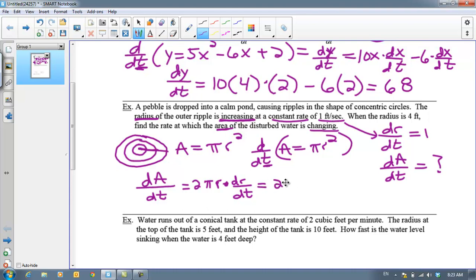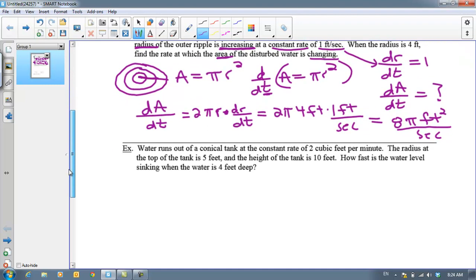The radius is 4 feet and the radius is changing at 1 foot per second. So, my answer is 2 times pi times r. r is 4 feet. And then r prime, or dr/dt, is 1 foot per second. And so, this works out to be 8 pi. When we multiply feet by feet, we get feet squared, or square feet, per second. And that's my answer to that. All right, last example.